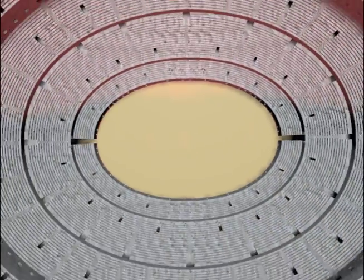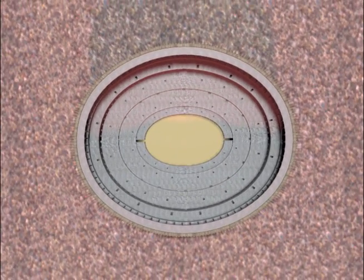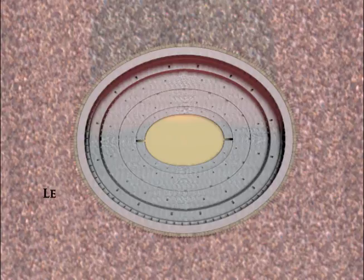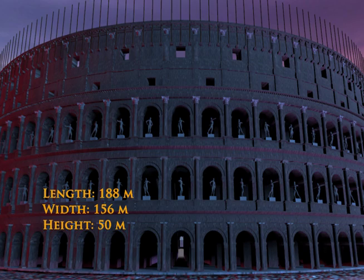Seen from above, the Colosseum is elliptical in shape. It was 188 meters long and 156 meters wide. It was also 50 meters high, or roughly the height of a 12-story building.